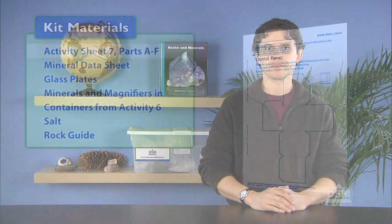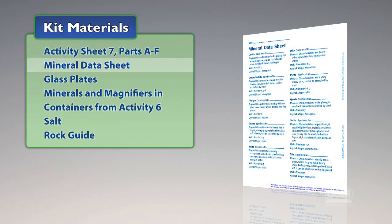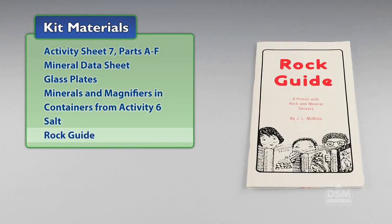You will need the following materials from the kit: Activity Sheet 7, Parts A-F, Mineral Data Sheet, Glass Plates, Mineral Specimens 1-10, Magnifiers in Storage Containers from Activity 6, Salt, and the Rock Guide.